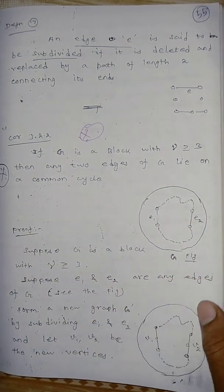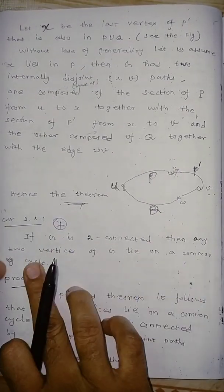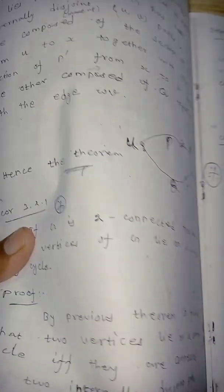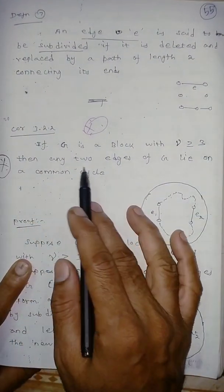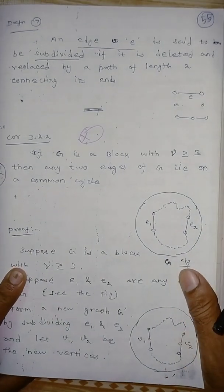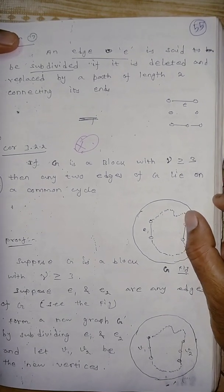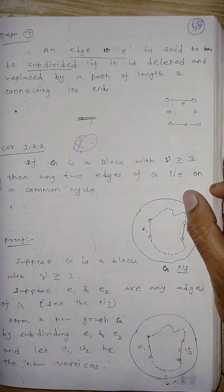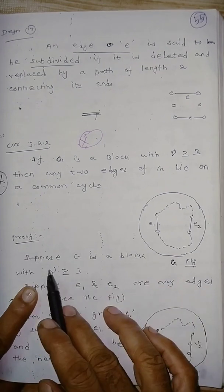From the previous corollary, any two vertices lie on a common cycle. The condition is: if G is 2-connected, there are two vertices on the edges, and we see them lie on a common cycle.